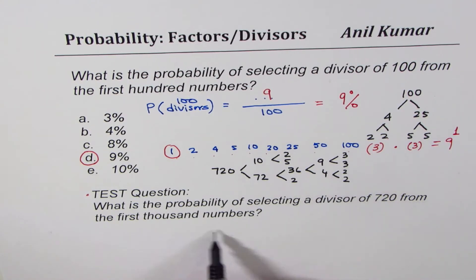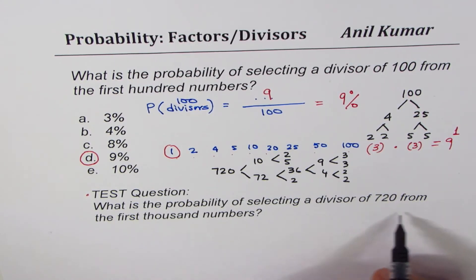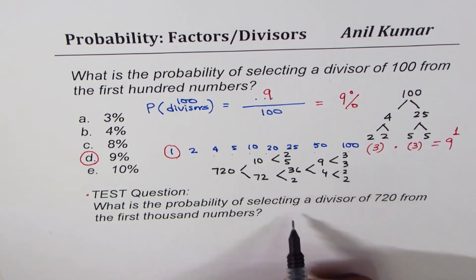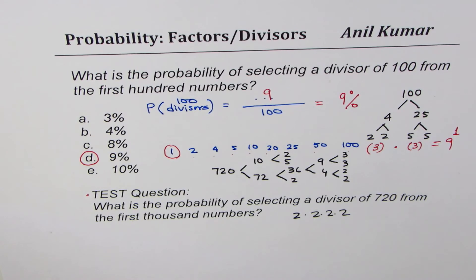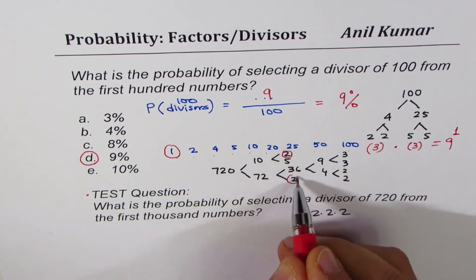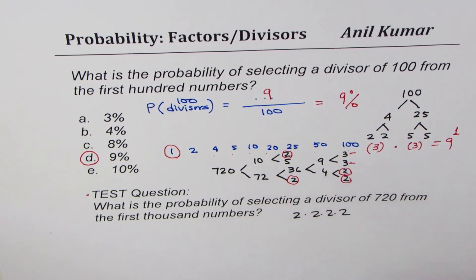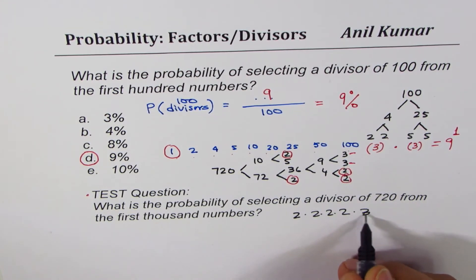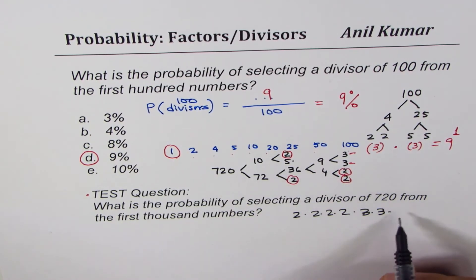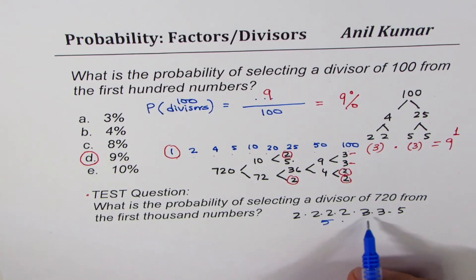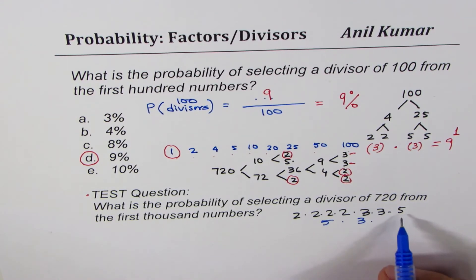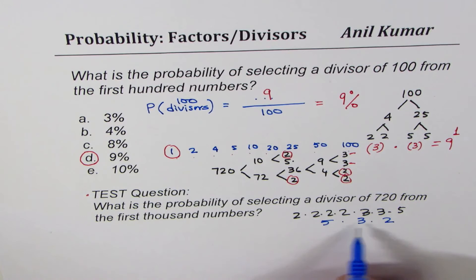Let's count the prime factors of 720. We have four 2s: 2 × 2 × 2 × 2. We have two 3s and one 5. Since we have four 2s, that gives 5 combinations (0 through 4). Two 3s gives 3 combinations. One 5 gives 2 combinations — take it or not. Multiplying: 5 × 3 × 2 = 30.